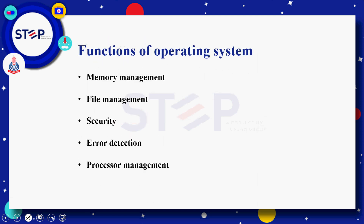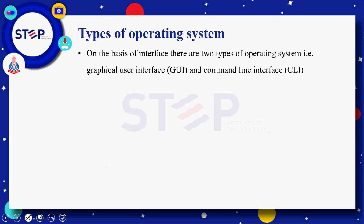Functions of operating system — ایک operating system کئی functions perform کر سکتا ہے جن میں Memory Management ہے، File Management ہے، Security ہے، Error Detection ہے، اور اس کے علاوہ Process Management ہے۔